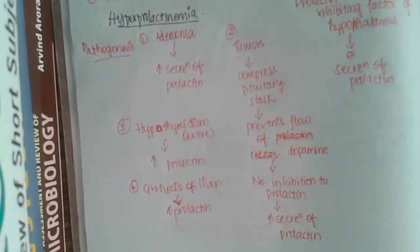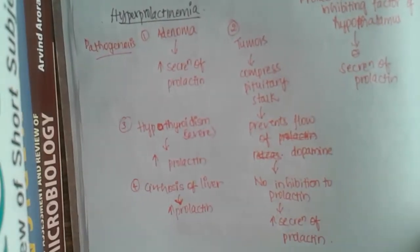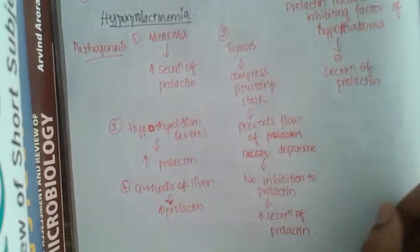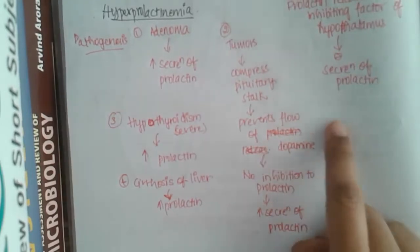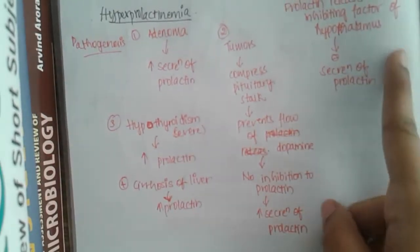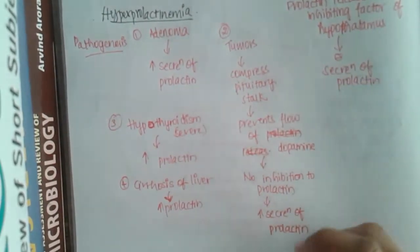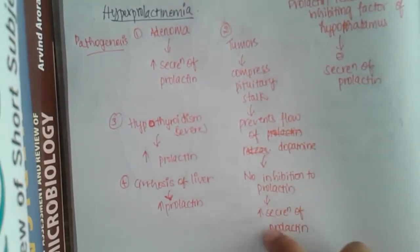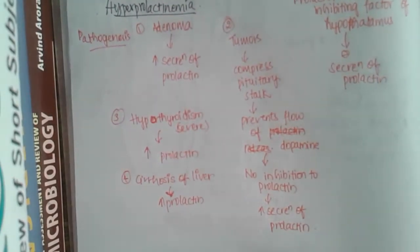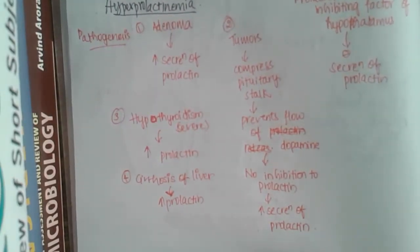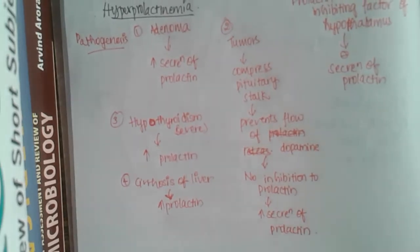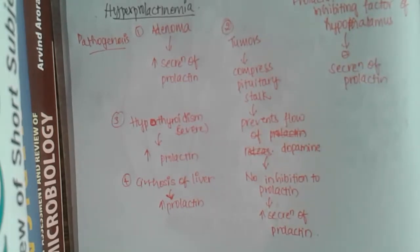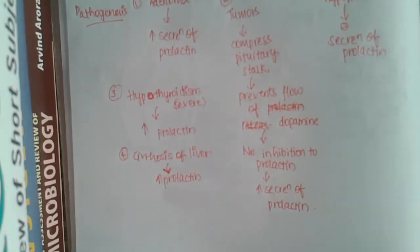So the main pathogenic mechanisms of hyperprolactinemia are four: one is adenoma; second is tumors compressing the pituitary stalk preventing dopamine flow causing no inhibition of prolactin; third is hypothyroidism; and fourth is cirrhosis of the liver, all of which lead to increased prolactin.